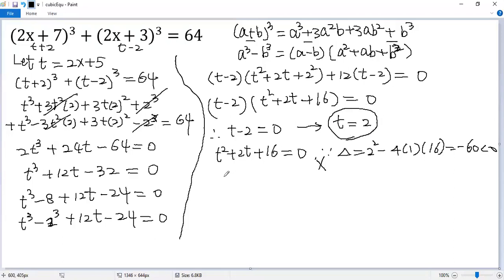Now we get back to x. 2x + 5 equals t, but now t equals 2. Both sides subtract 5, so we get 2x equals negative 3. So x equals negative 3 over 2, the only real solution for the given equation.